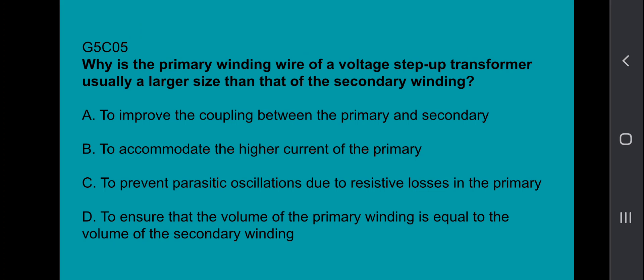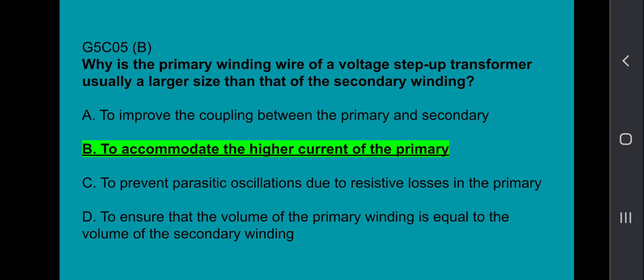G5C05: Why is the primary winding wire of a voltage step-up transformer usually a larger size than that of the secondary winding? That's to accommodate the higher current of the primary.